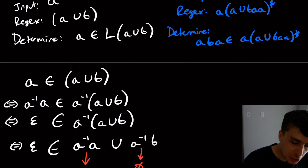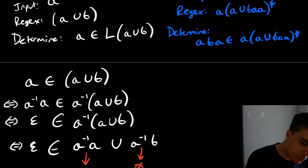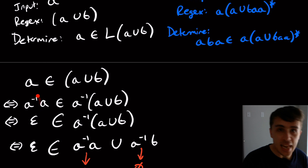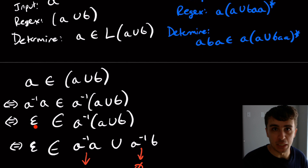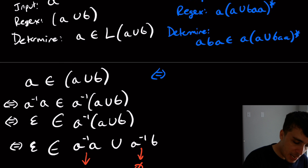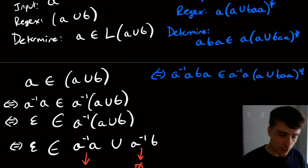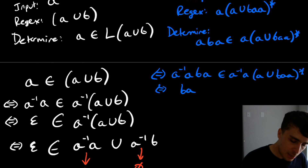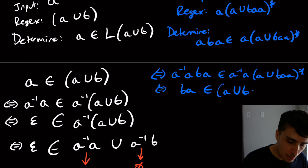To determine if this string is in the language, we take the derivative one character at a time. We multiply by `a` inverse on the left side to make the leading `a` disappear. On the right side, the `a` inverse and the leading `a` in the regex cancel out. So we get: is `ba` in `(a union b)aa*`?